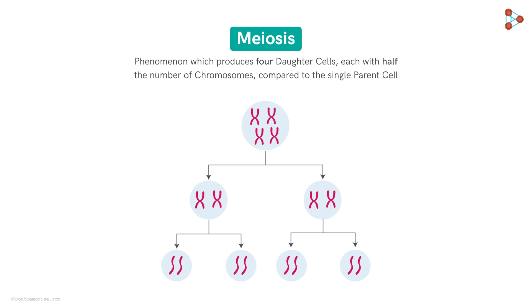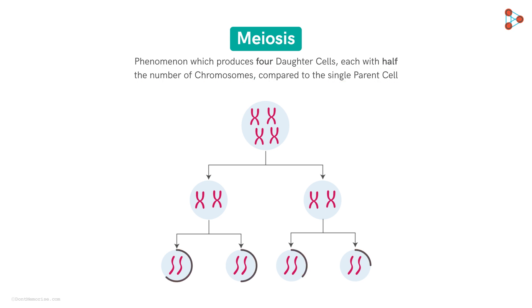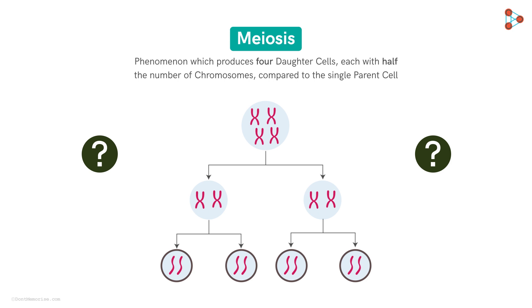Let's begin with the definition of meiosis. Meiosis is an exceptional phenomenon which produces four daughter cells, each with half the number of chromosomes compared to the single parent cell. The process gives us four new cells, unlike in mitosis, which produces only two new cells. And what could be the reason for this? Why do we need four daughter cells, and that too with half the number of chromosomes?